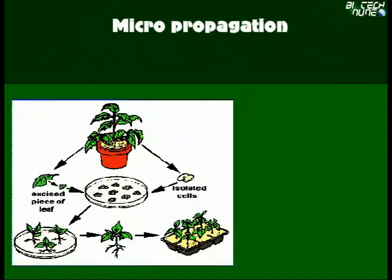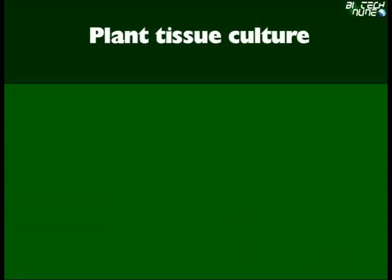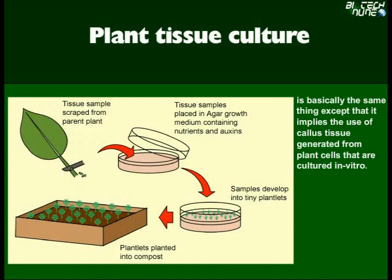Micropropagation is the production of a whole plant from small sections of a plant, such as stem tip, node, embryo, or even a seed. Plant tissue culture is basically the same thing, except that it implies the use of callus tissue generated from plant cells that are cultured in vitro.